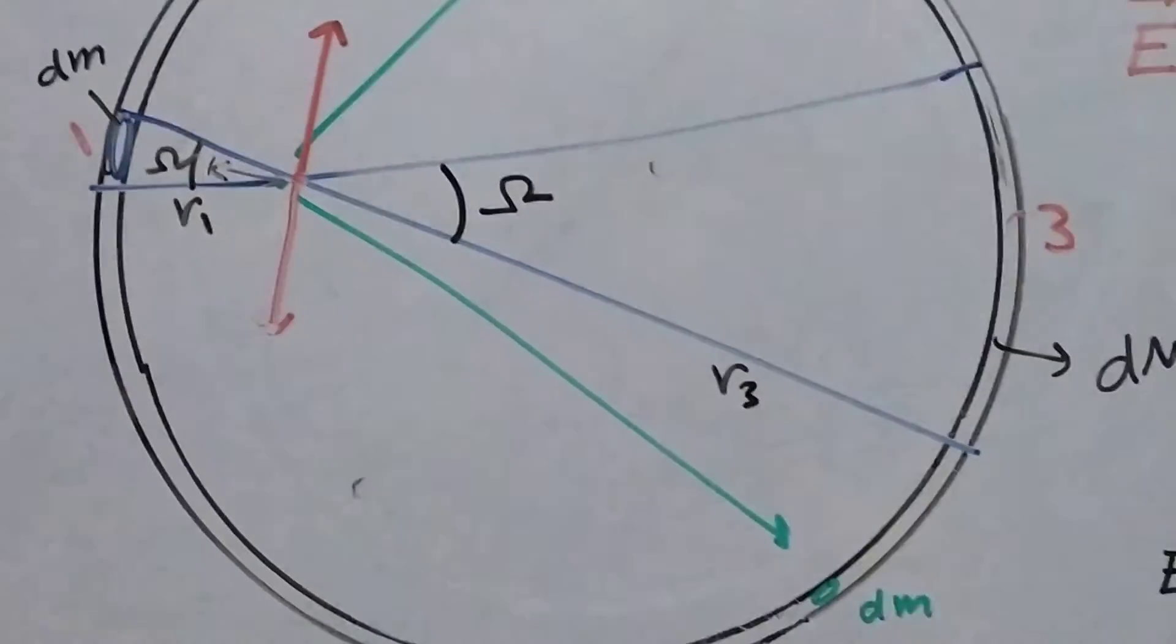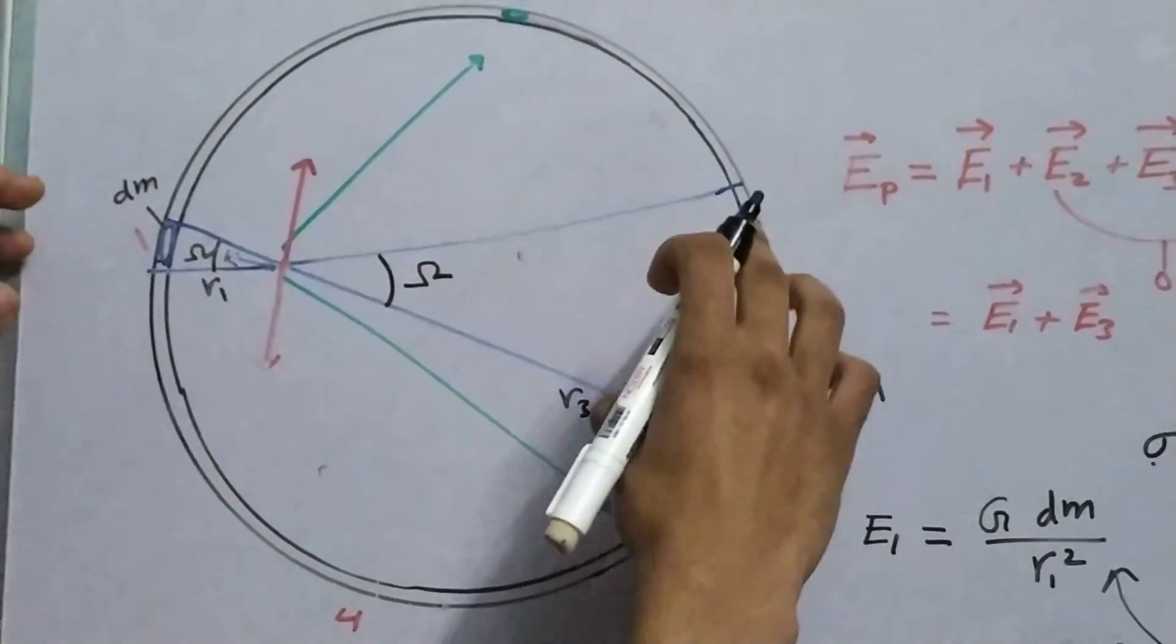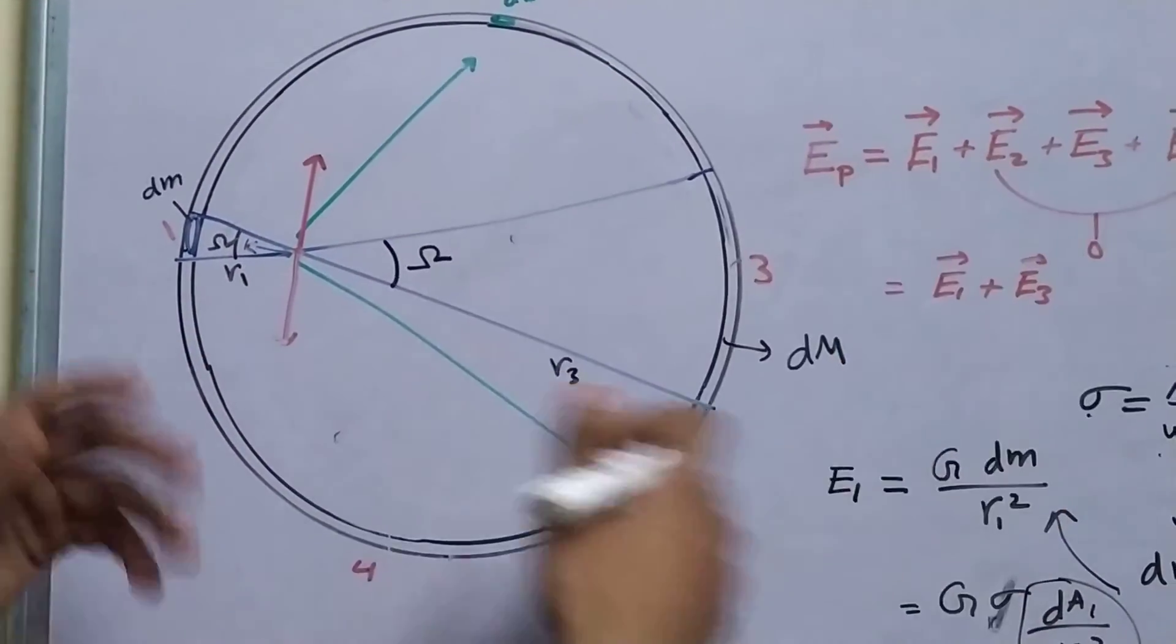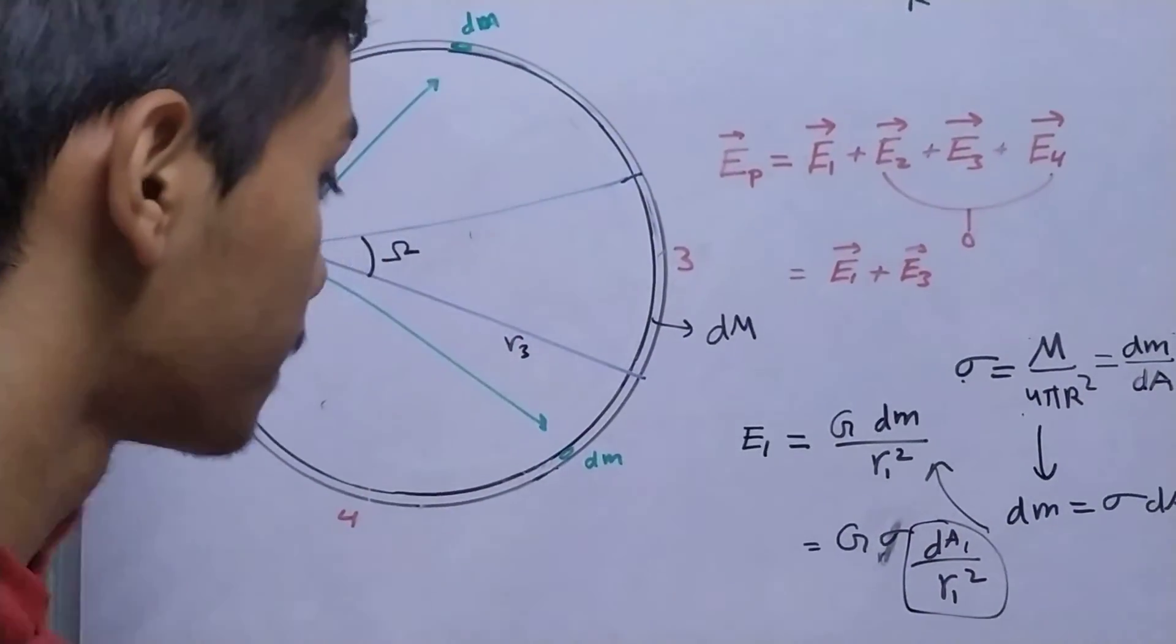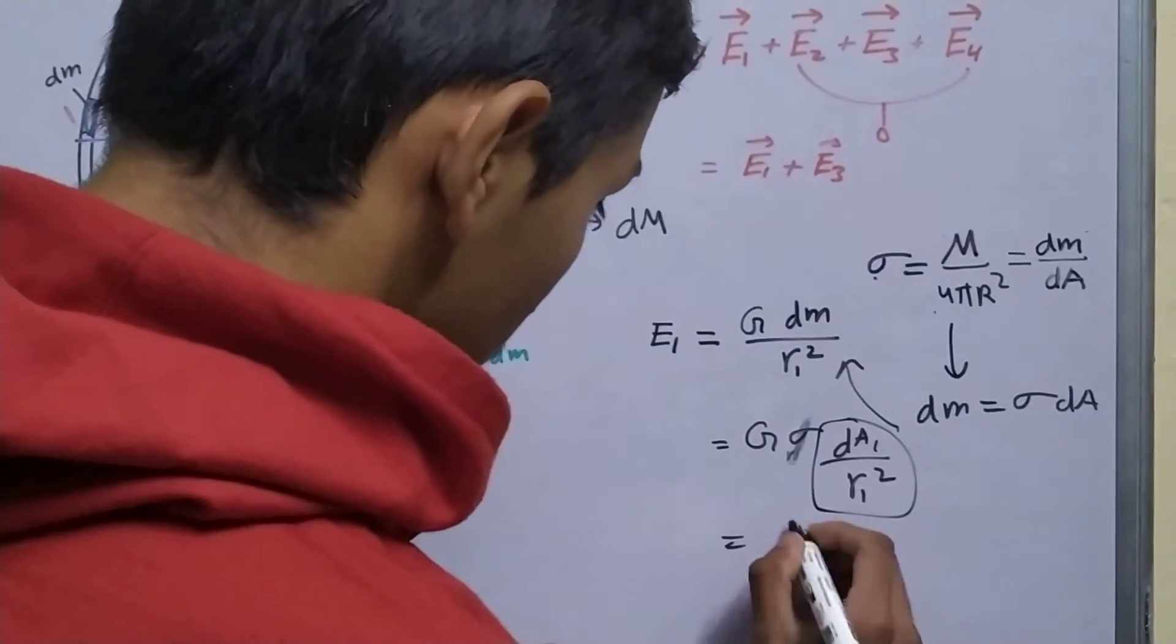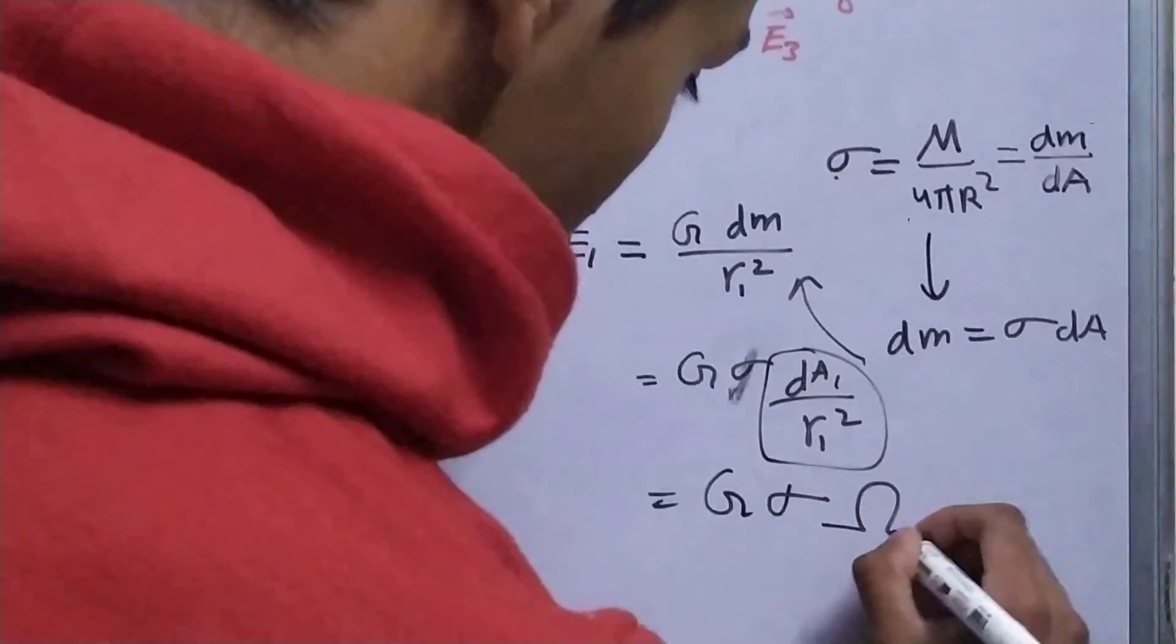And that was the whole point of this construction. So that the solid angle, your mass is varying, your radius is varying, but your solid angle remains the same. You can write this as g sigma omega.